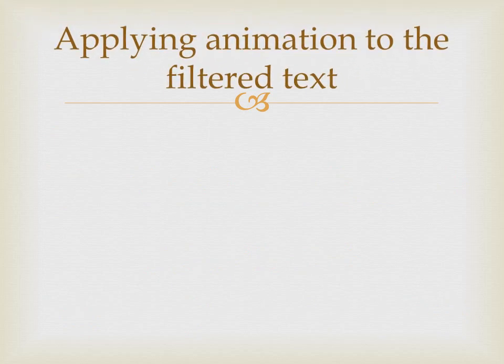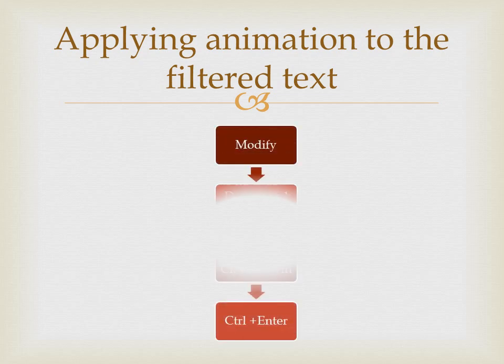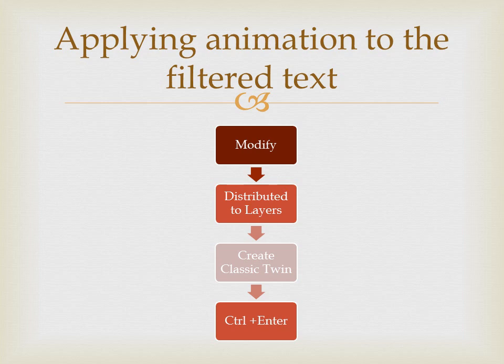The next heading is applying animation to the filter text. First, select the filter text created above and choose Break Apart from the Modify menu. Right-click on the text and select Distribute to Layers — this creates an individual layer for each letter. Select the layer of the first letter and insert a keyframe. Repeat for the second letter and all remaining letters at equal intervals. Right-click on the timeline between the two keyframes of the first letter's layer and select Create Classic Tween. Repeat for all layers. Select each keyframe and choose the Brightness option from the style drop-down list under the color effect section in the properties panel. Drag the brightness slider to 100%. Press Ctrl+Enter to preview the animation.